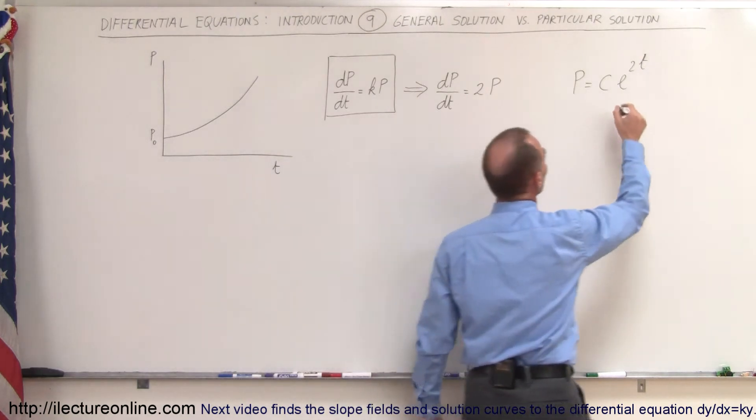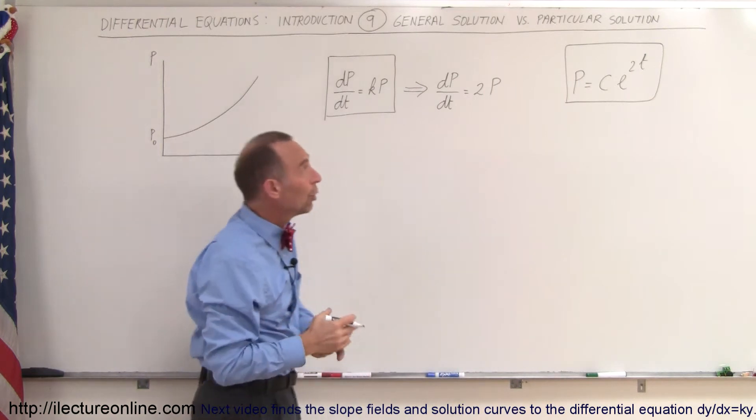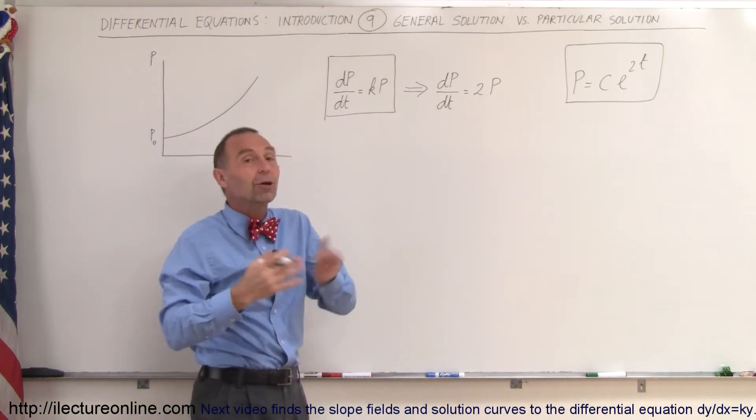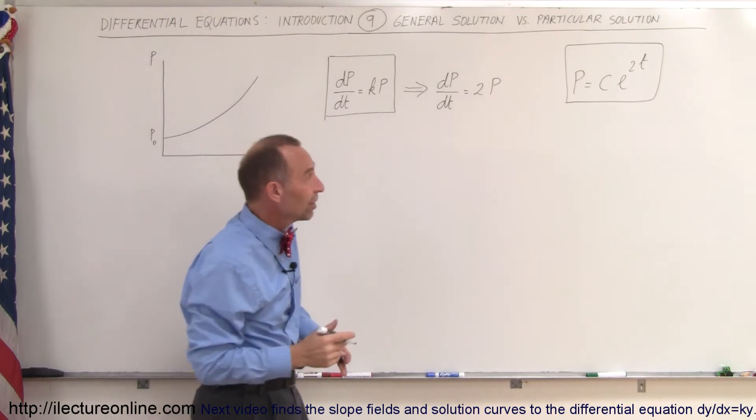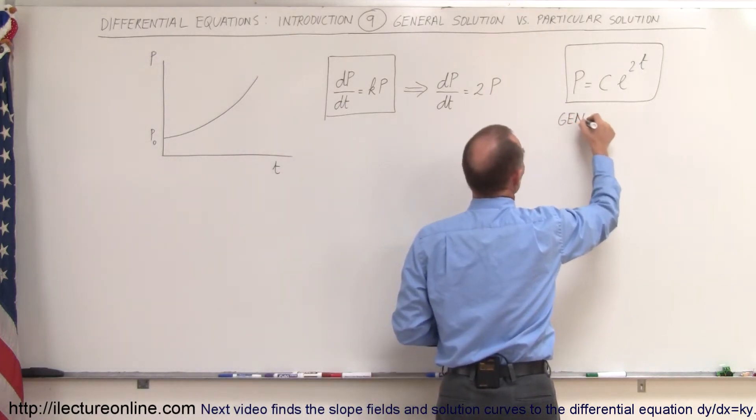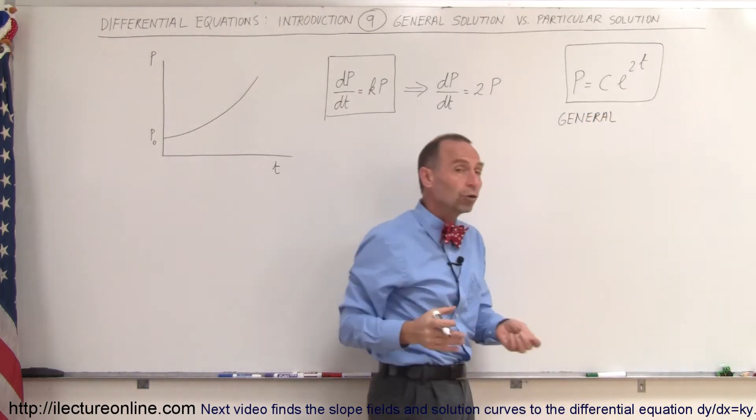So that would be the solution of our differential equation. Now, since we don't know what c is equal to, we call that the general solution because that really defines that there's an infinite number of solutions depending upon the value of c. So this is known as the general solution. And typically, when we solve differential equations, that is what we're looking for, the general solution.